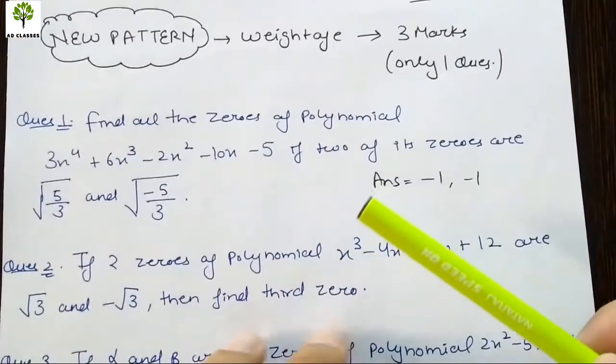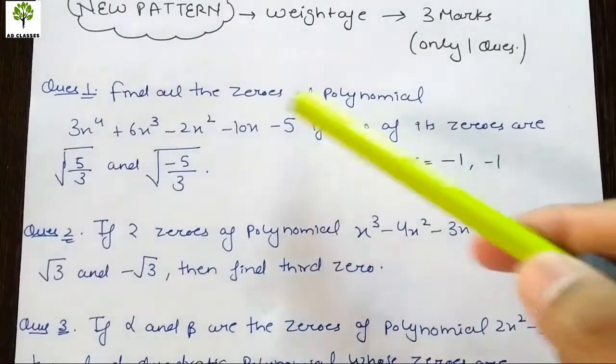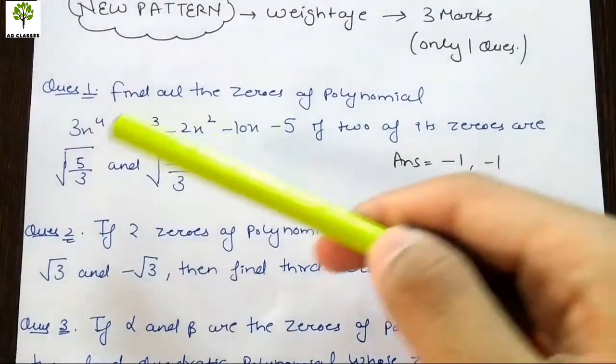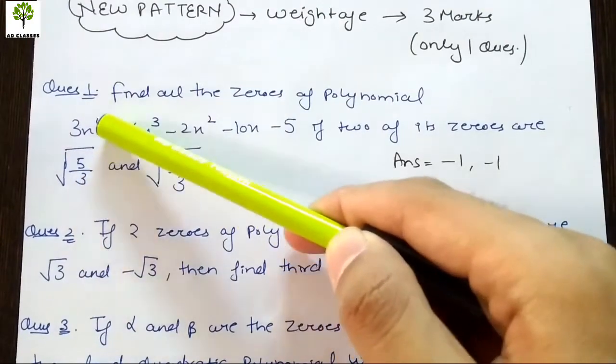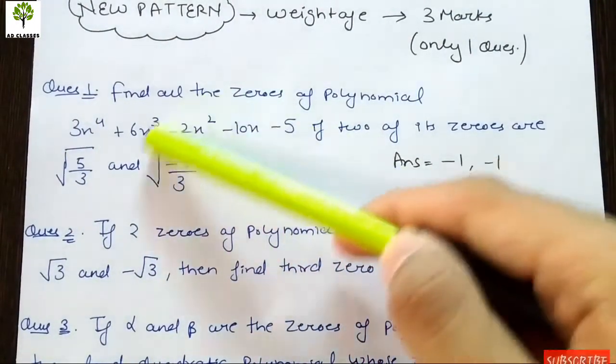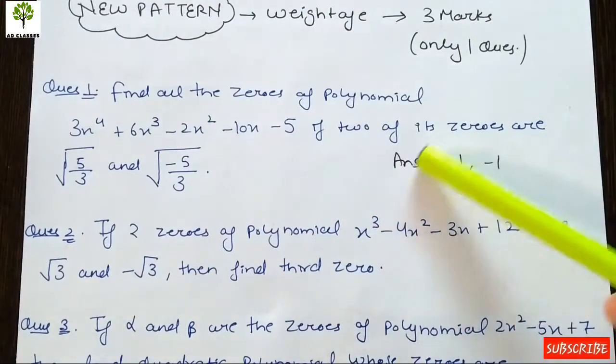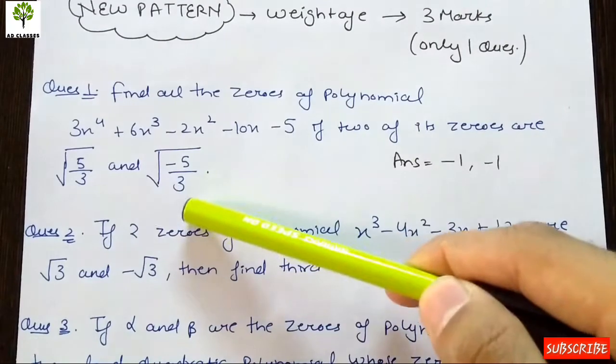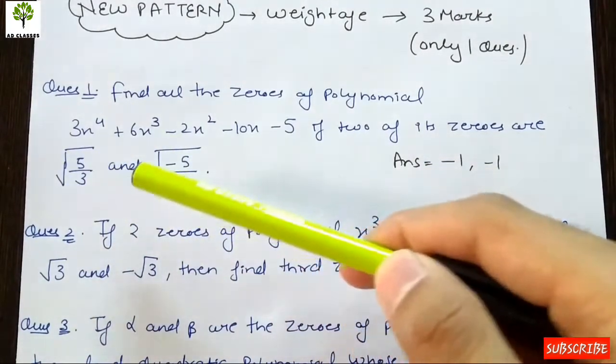Question 1: The polynomial is 3x⁴ + 6x³ - 2x² - 10x - 5. If two of its zeros are given as √(5/3) and -√(5/3), find the other zeros.